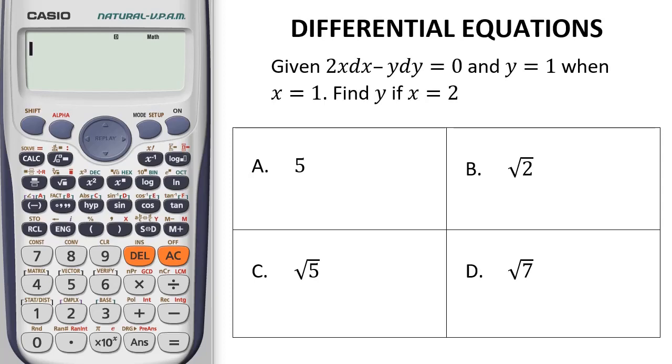Given 2x dx minus y dy equals 0, and y equals 1 when x equals 1, find y if x equals 2.